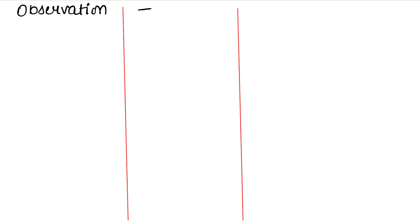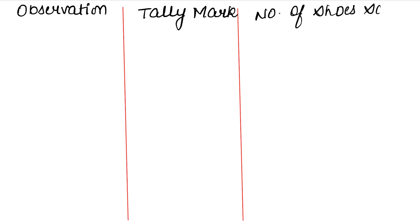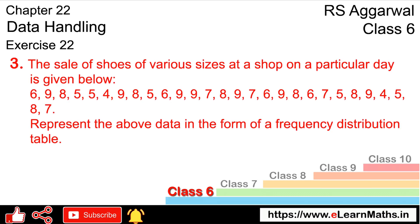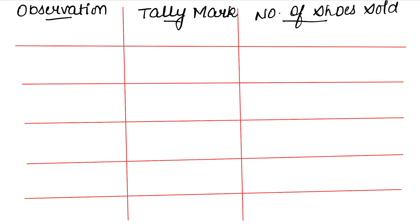Again, we make three columns: Observation, Tally Mark, and Number of Shoes Sold. For the observation column, we find the minimum and maximum shoe sizes. The sizes range from 4 to 9, so we write: 4, 5, 6, 7, 8, and 9.